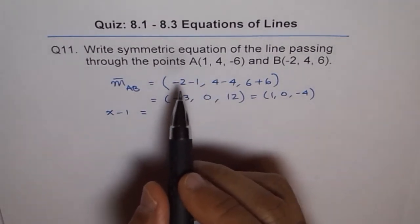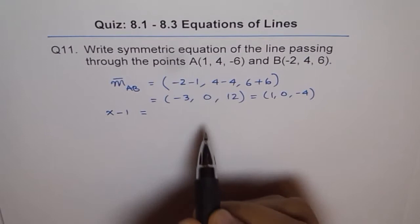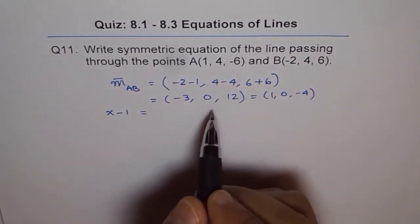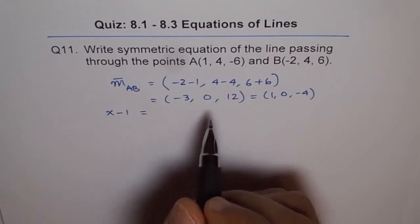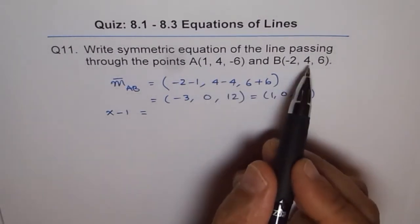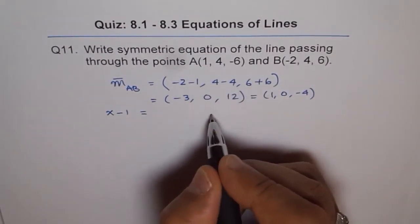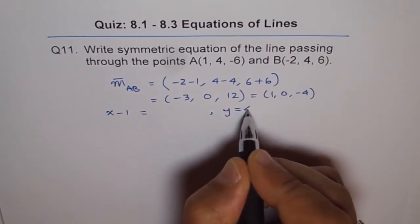And then we get y minus 4 divided by 0, but you can't divide by 0. So, what to do? And you'll notice that y is always 4, so in such cases, we write y equals 4.